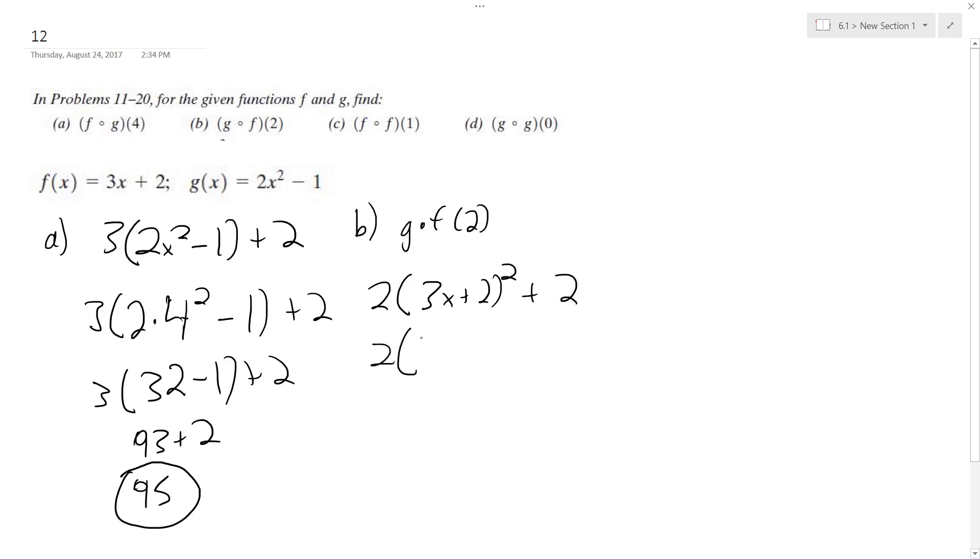So 2, and then 3, and then we're plugging in 2 times 2 plus 2, squared plus 2. This becomes 2 times 6 plus 2, so that's 8 squared plus 2, 64 times 2, so 128.